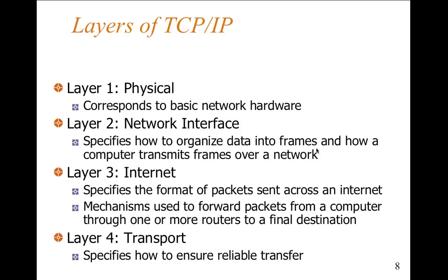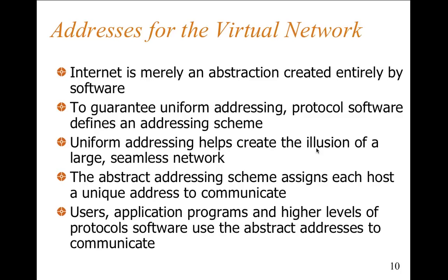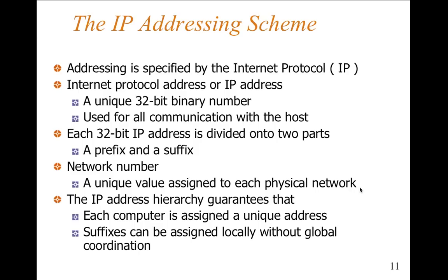If you want to see the five-layer model, that's what we're working with. Compare it to the seven-layer model. The DOD actually uses a stripped-down version of the OSI model as well — they don't even go with all seven layers. In terms of addressing, this is where we address the IP issue: the host name and the addressing scheme we've been using in examples. The internet is an abstraction created entirely of software, addresses, and so on. To guarantee uniform addressing, the protocol software defines the addressing scheme — it's a man-made setup.